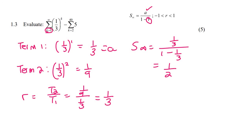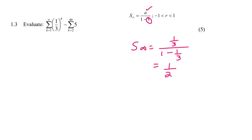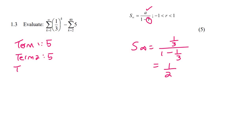Okay so we've done the sum to infinity. Now for this next part — it's really interesting. To find term 1 you plug whatever this number is into here, but the thing is there is no K over here. So term 1 is 5, term 2 is also 5, term 3 is also 5, and term 4 is also 5. So we're going to have a whole lot of 5s.